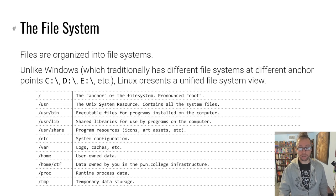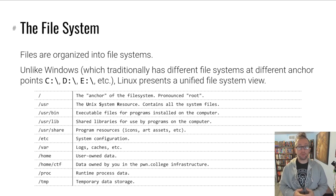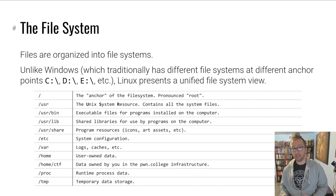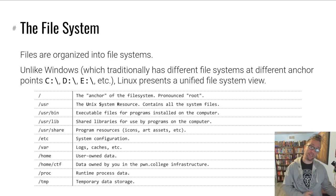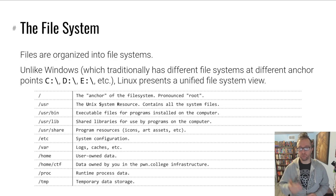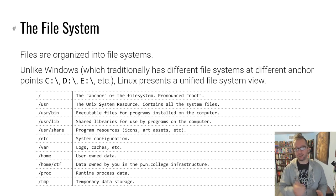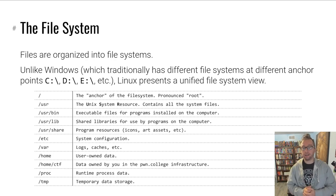Let's talk about the file system, which is where files live. You might have experience with Windows — in Windows you have a C drive, and if you have additional drives you might have a D drive, an E drive, and so on. Linux is not like that. Linux presents a unified file system view. It is anchored at slash, also pronounced root — the root of the file system tree. That's a little confusing nomenclature because root is used for some other concepts, but there's no way around it.